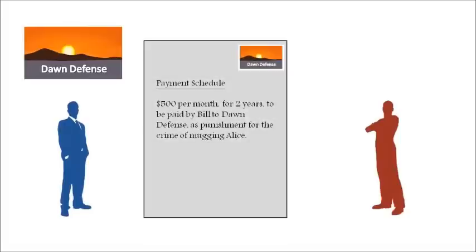If Bill cannot afford the $10,000 punishment, Dawn Defence will accept payment over a longer term. They may insist on taking a portion of his wages until his debt, plus interest, is paid — and they may contract with his employer to ensure they are paid on time.